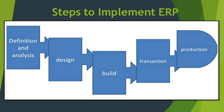To implement ERP, there are five phases. The first phase is definition and analysis. The second is the design phase. The third is the build phase. The fourth is the transaction phase. And the fifth is the production phase. These are the five steps to implement ERP in any company.